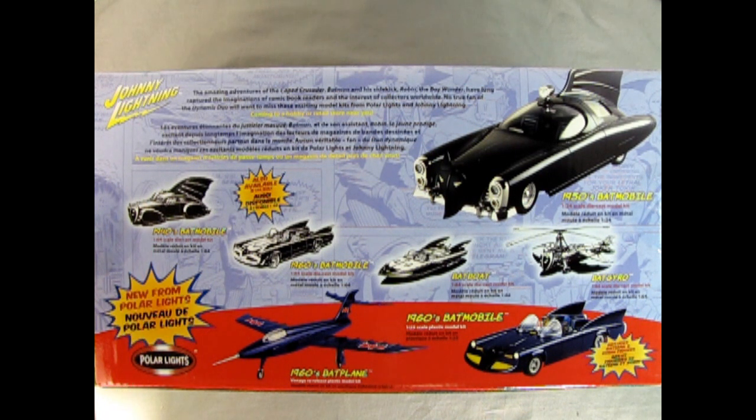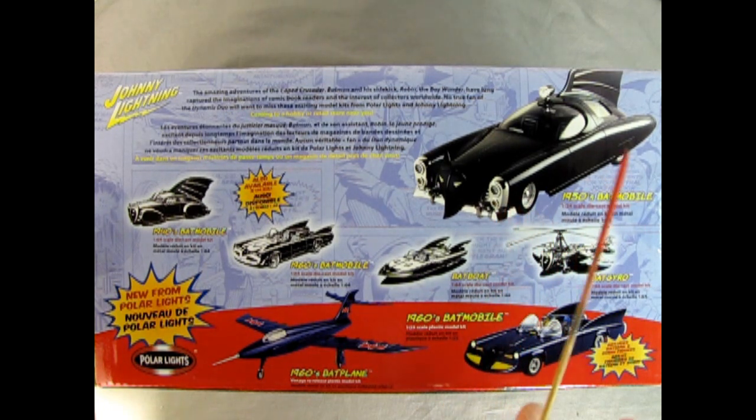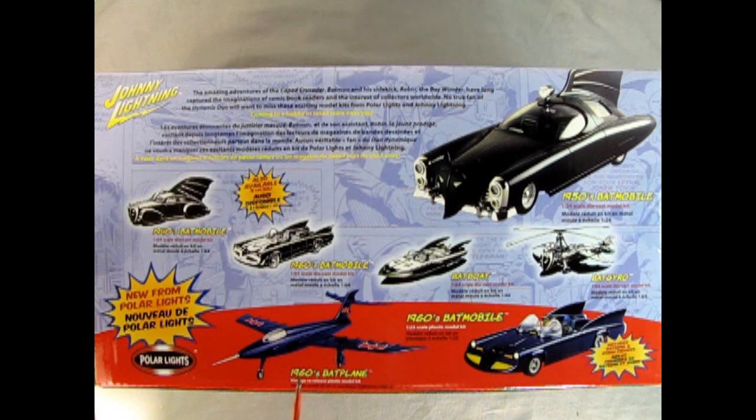Like the 1940s Batmobile, the 1:64th die-cast 1960s Batmobile, the Batboat, the Batgyro, and the 1950s Batmobile, which we saw in a previous video. And down below by Polar Lights, we have plastic kits of the 60s Batplane and the 60s Batmobile.